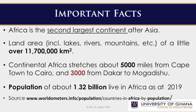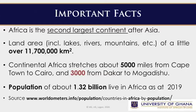Now, having explained this, let us look at some important facts about Africa. Africa is the second largest continent after Asia. It has a land mass — which includes lakes, rivers, mountains and so on — of a little over 11.7 million kilometers square. Continental Africa stretches for about 5,000 miles from Cape Town in the south to Cairo in the north, and about 3,000 miles from Dakar in the west to Mogadishu in the east. It has a population of about 1.32 billion as at 2019.